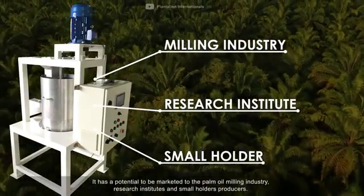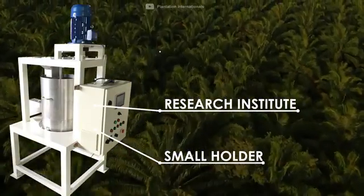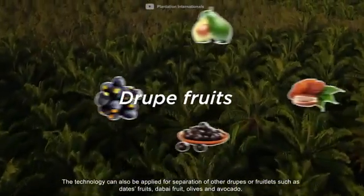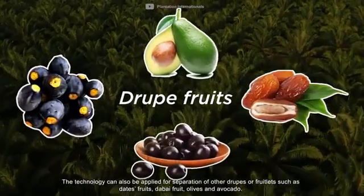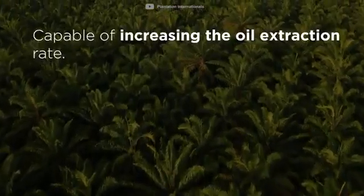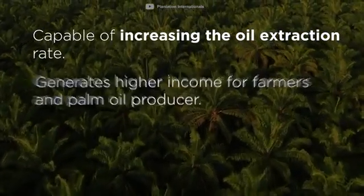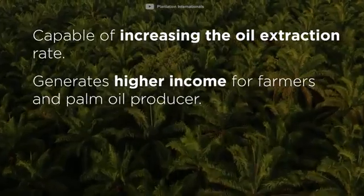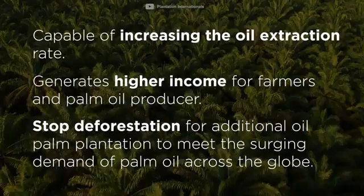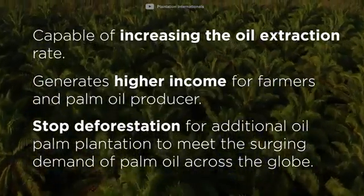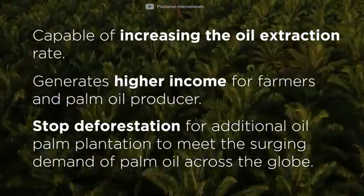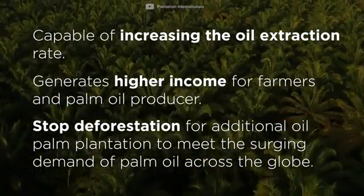The rotodisc has potential to be marketed to the palm oil milling industry, research institutes, and smallholder producers. The technology can also be applied for separation of other fruits such as dates, Dubai fruit, olives, and avocado. This technology is capable of increasing the oil extraction rate, generating higher income for farmers and palm oil producers, and the improved extraction efficiency can help stop deforestation for additional oil palm plantations to meet the growing global demand for palm oil.